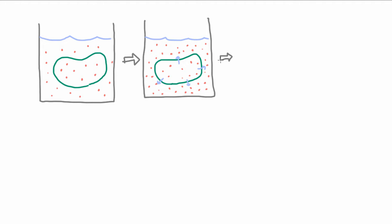And so now the cell is actually going to lose some volume. It's actually going to shrink down and shrivel up a little bit and it will reach equilibrium when the concentration of solutes outside and inside is once again equal.